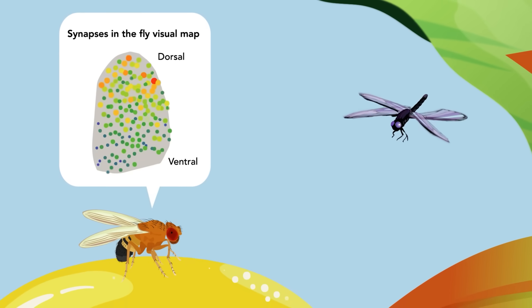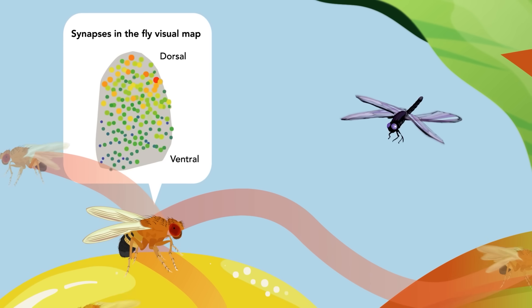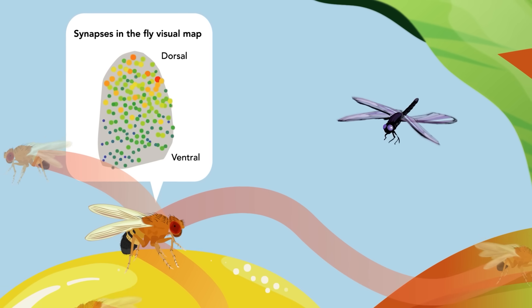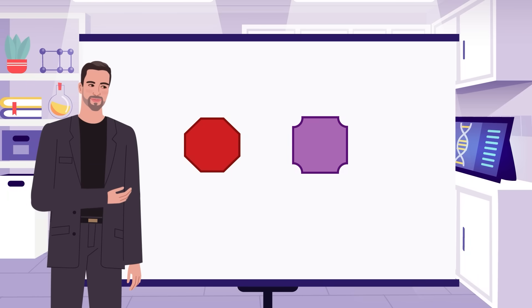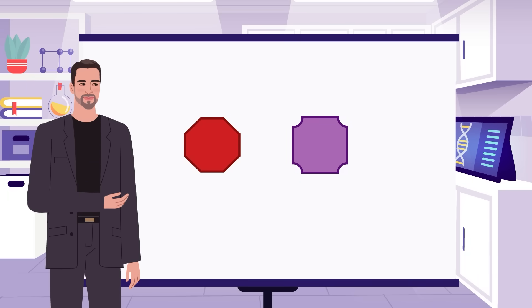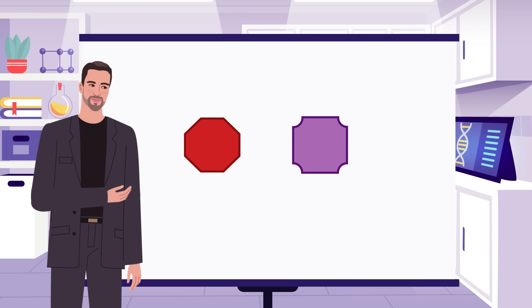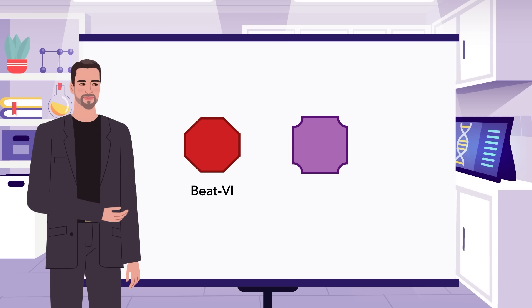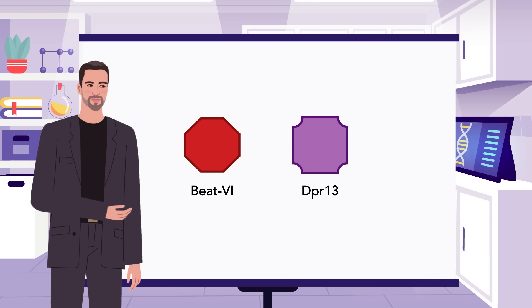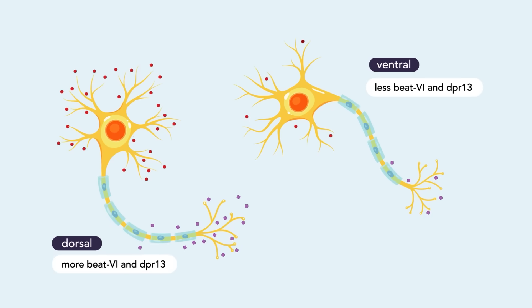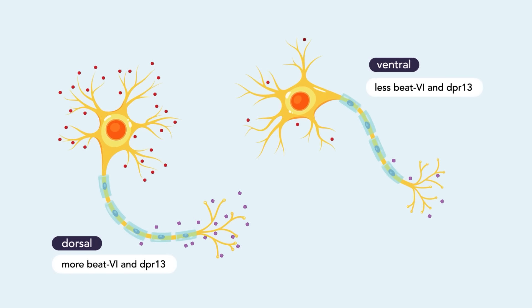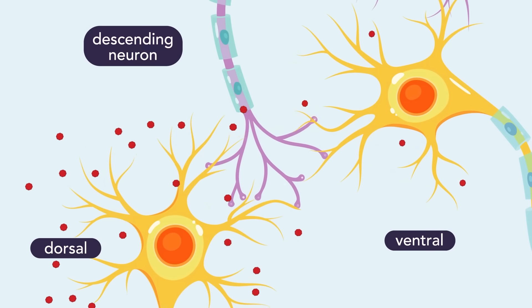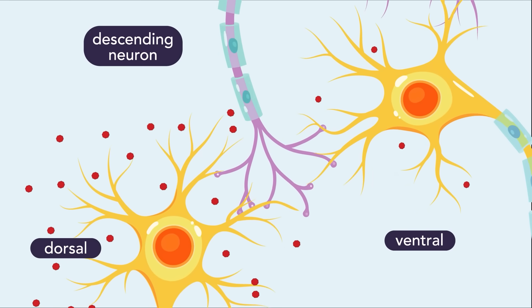This neural map translates visual object locations directly into precise movement directions, enabling flies to accurately escape danger. To understand how such precise wiring occurs at the molecular level, Dr. Dombrowski identified two neuronal recognition molecules—Beat 6 and Dpr13—that guide developing neurons toward correct partners. Remarkably, each neuron expresses these molecules at distinct levels, forming unique molecular identities that determine their connectivity.